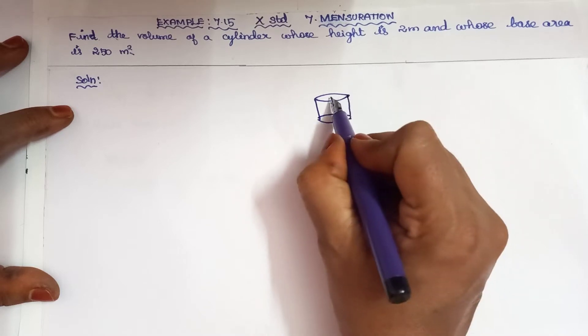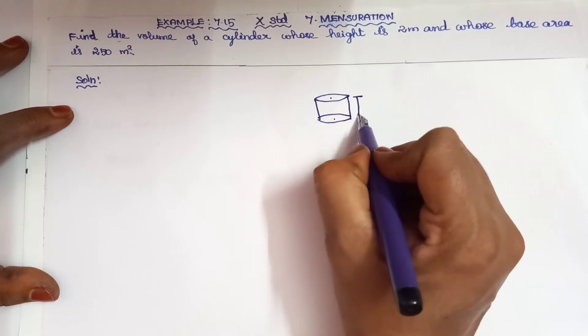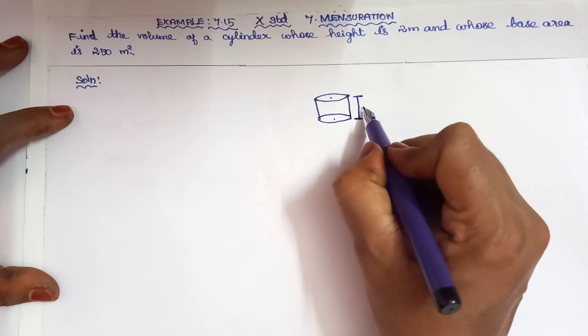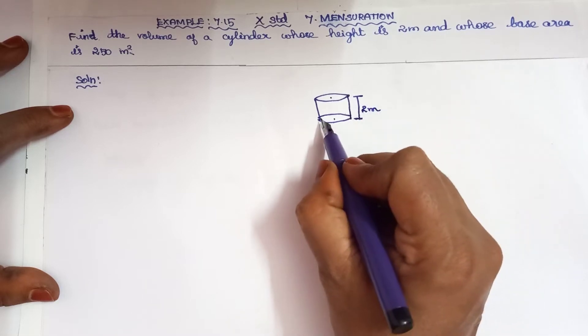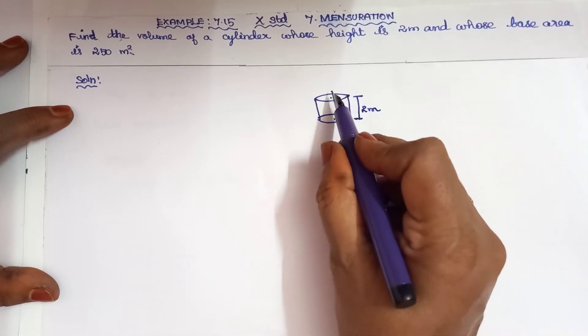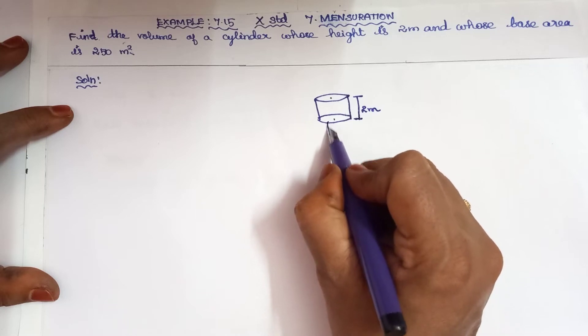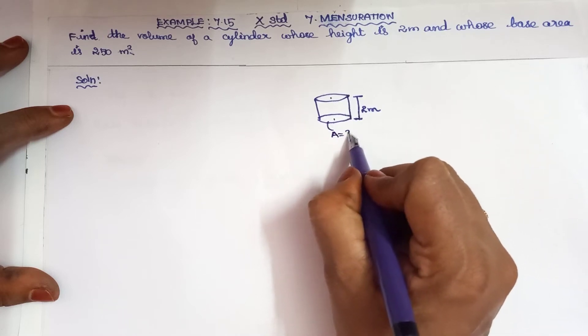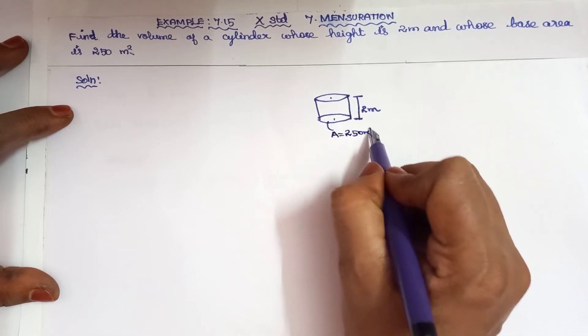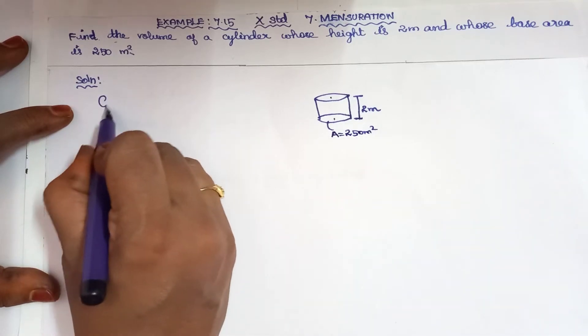Height means from top to bottom. The height is 2 meters and the base area is a circular shape. The area value is 250 meter square.